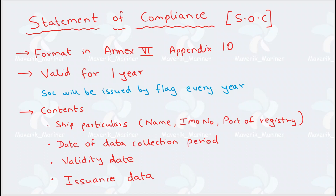Now let's look at the contents of the Statement of Compliance. It contains ship particulars: name, IMO number, and port of registry. It also contains the date of the data collection period — for example, 1st January 2019 to 31st December 2019 — the validity date for 1 year, the expiry date, and the date of issuance.